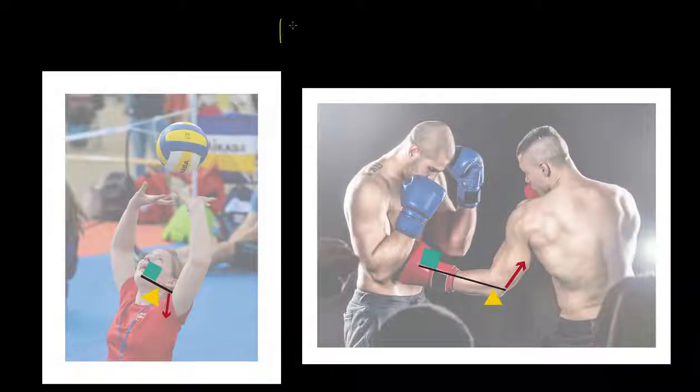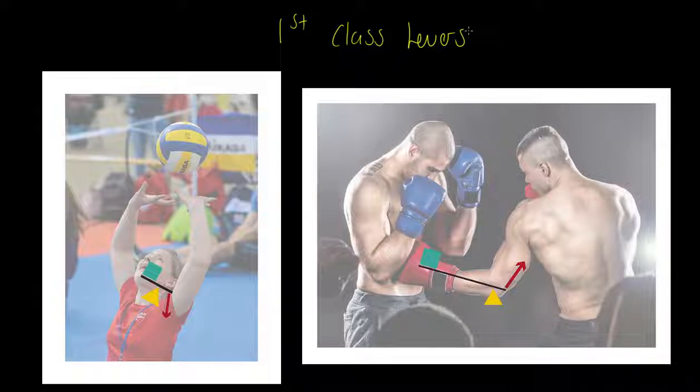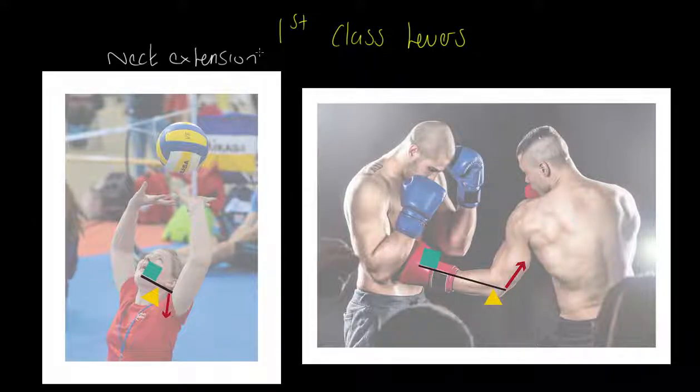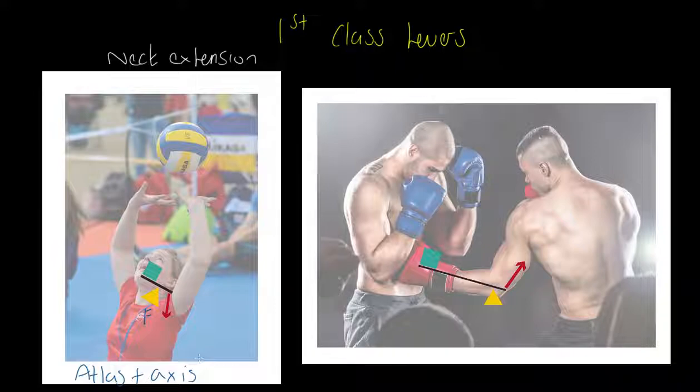Let us talk about first class levers. These types of levers are not overly common in the human body, but there are a couple of really good examples. We've got the example of neck extension. We've got our fulcrum in the middle. That, of course, is the neck joint, and I would like you to refer to that ideally as the atlas and axis joint. It's a joint between C1 and C2 vertebra. That's a whole other story.